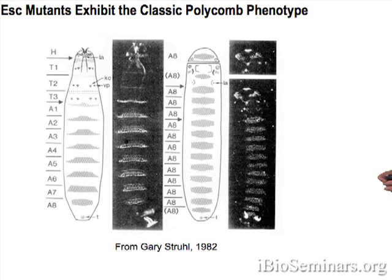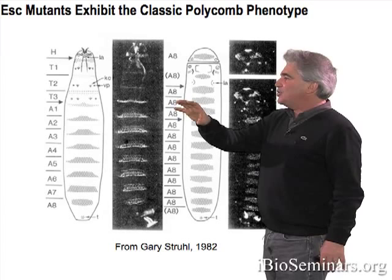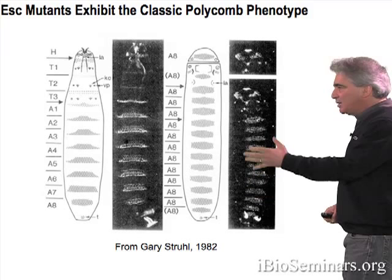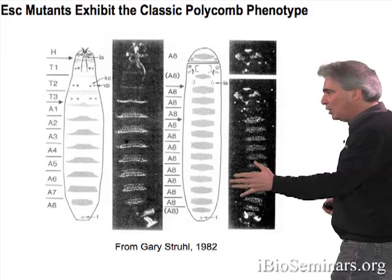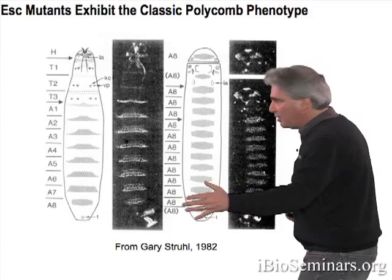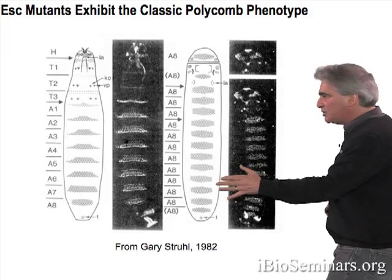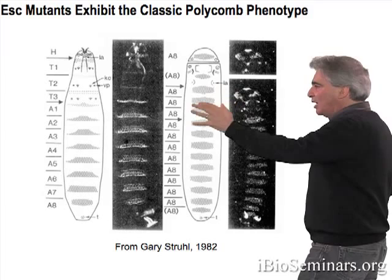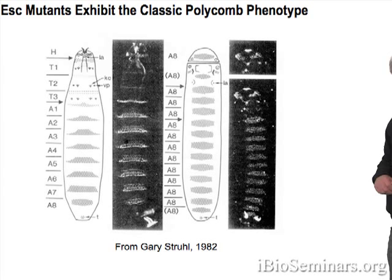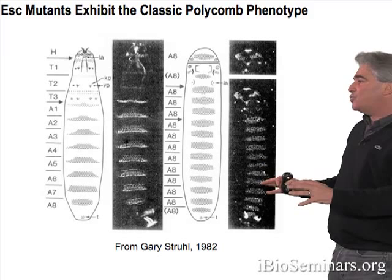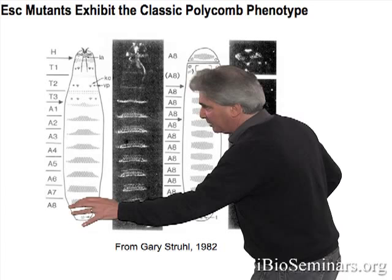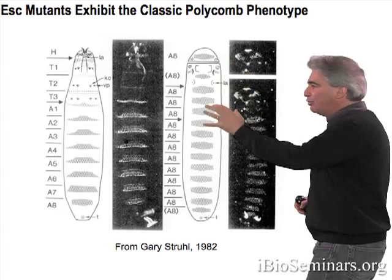This shows a polycomb mutant called ESC, or extra sex combs, and what you're looking at is the cuticle secretion of the ventral skin in late-staged embryos. In polycomb mutants such as ESC, all the body segments acquire the phenotype of the posterior-most eighth abdominal segment, or A8. So in polycomb mutants, the anterior abdomen, the thorax, and even some of the head segments are transformed into A8. This transformation is due in part to the misexpression of a Hox gene called Abdominal-B, which is normally transcribed at the highest levels in the developing A8 segment, but in polycomb mutants is transcribed at high levels throughout the embryo.